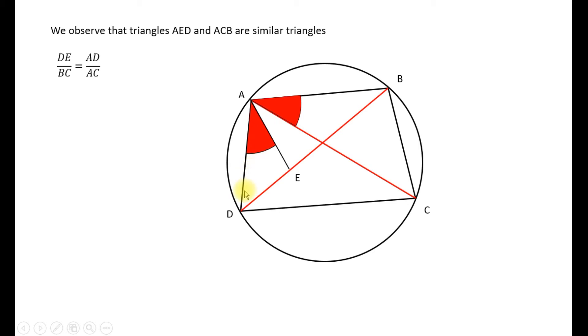Now AD is opposite this angle here the angle DEA and AC is opposite this angle here ABC. If we cross product we can write this relationship at this line here.